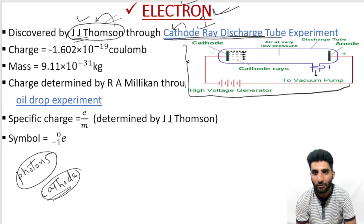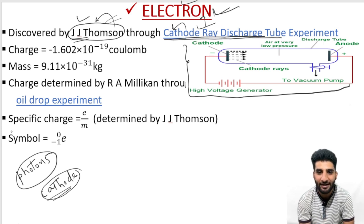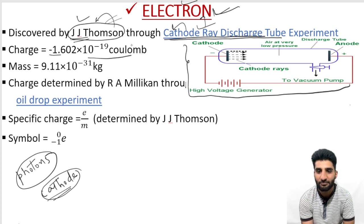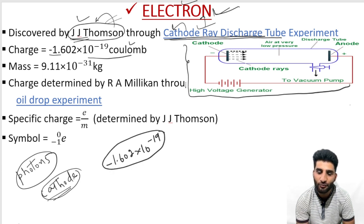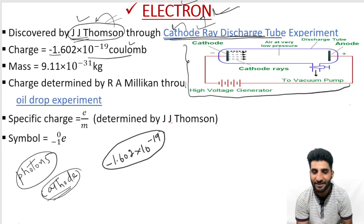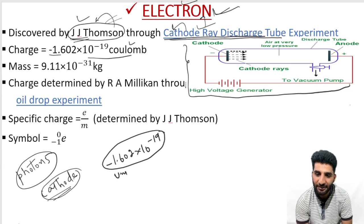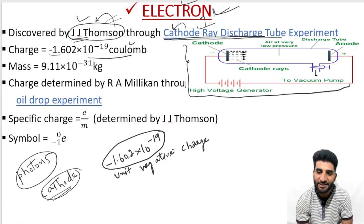The electron has both charge and mass. The charge of the electron is minus 1.602 × 10⁻¹⁹ coulombs. This magnitude of charge is the smallest charge that exists in nature, which is why we call it a unit negative charge. So the electron carries a unit negative charge of minus 1.602 × 10⁻¹⁹ coulombs.